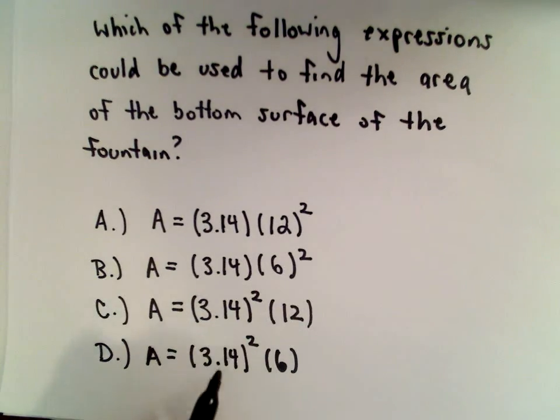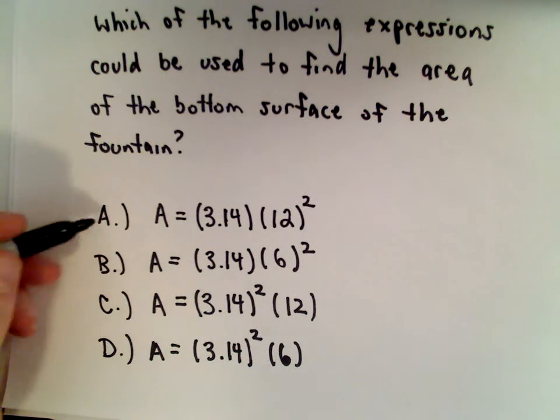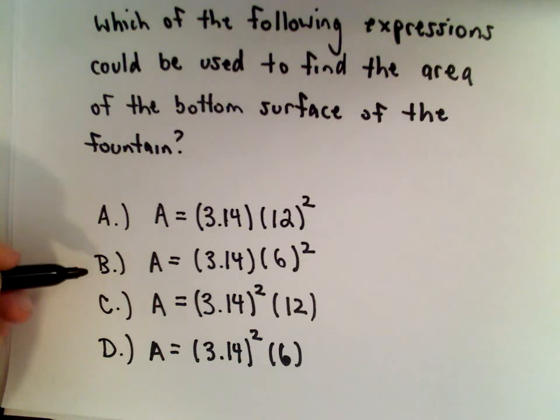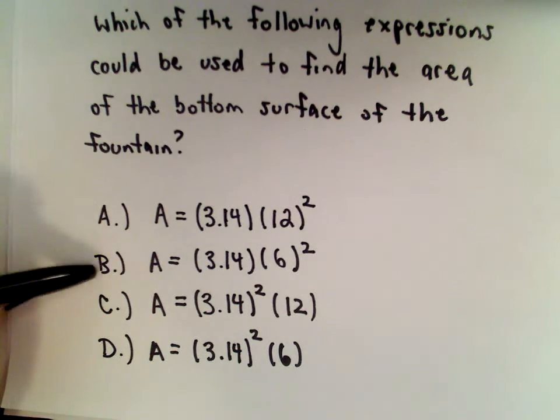So if I saw this 3.14 squared and this 3.14 squared, I would know that C and D are not correct, and it would be one of the two choices, A and B. So at least at that point, I would have it narrowed down to two possible solutions.